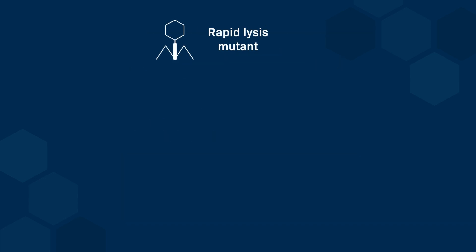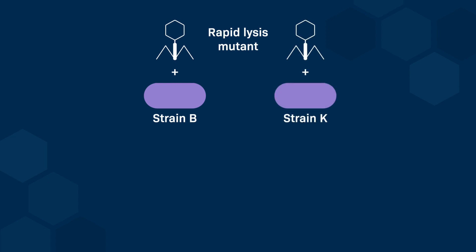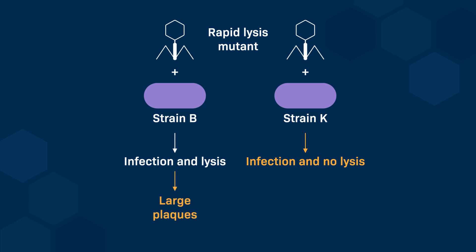Seymour Benzer resolved a bacteriophage research issue by identifying differences in E. coli strains used by US and French scientists. Strain B, used in the US, and strain K, used in France, can both be infected by wild-type T4 and mutant bacteriophages. However, the rapid lysis mutant can only trigger lysis in strain B, forming large plaques, whereas strain K forms no plaques with the mutant. Both strains form small plaques with the wild-type T4 phage.